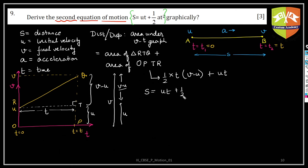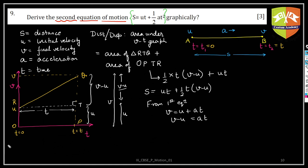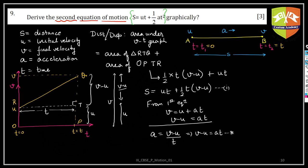Rearranging, s = ut + ½t(v - u). From the first equation of motion, v = u + at, so v - u = at. Alternatively, since acceleration equals the slope of the v-t graph, a = (v - u)/t, which also gives v - u = at. Call this equation 1 and the area result equation 2.